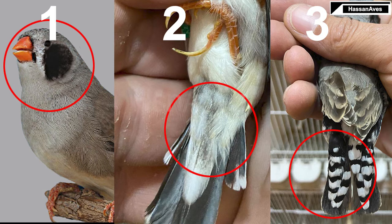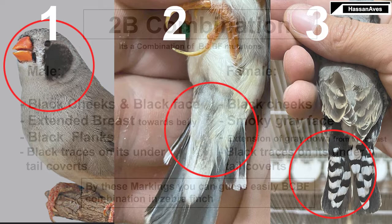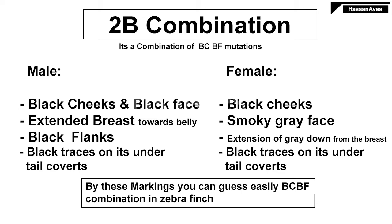In the female, you can easily identify this combination by markings such as smoky face, smoky breast, lower breast extension, and a clearly visible black cheek patch. In the second picture you can see black traces to its lower tail covers. By these noticeable points, I hope you can now easily identify the black face and black cheek combination in zebra finch.